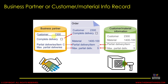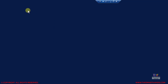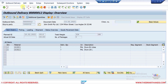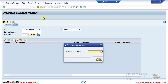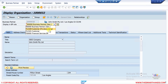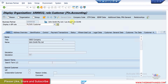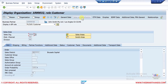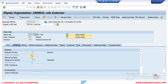If a setting is maintained in both the business partner and the customer material information record, the CIR setting takes priority and overwrites the business partner setting. Let me quickly show you where this setup is maintained. In the business partner transaction FLCU01, go to sales and distribution, and for your sales area, go to the shipping tab. Here you can see the order combination checkbox, meaning different sales orders can be combined into one delivery document.